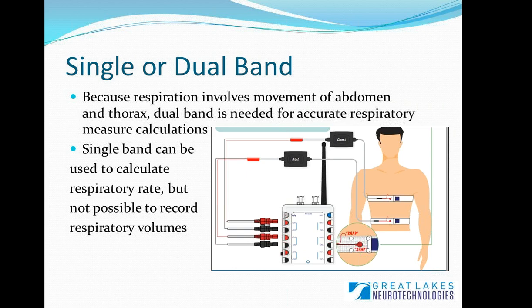This is what the RIP setup looks like — you can see bands worn around the chest. A common question is whether to use just one band around the thorax or two bands around the thorax and abdomen. Looking at the physiology behind respiration, it really involves movement of both the abdomen and thorax. Having both bands is needed to get accurate respiratory measurements, including volume, flow, and rate. With just a single band, you could calculate respiratory rate from the waveform, but you cannot accurately record respiratory volumes — so using two bands is really important.